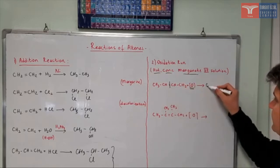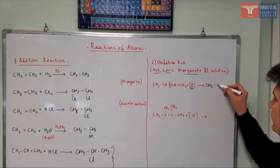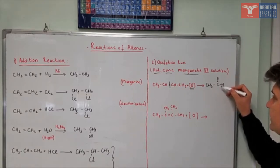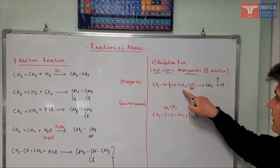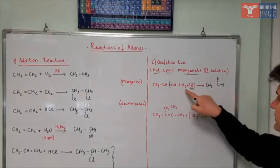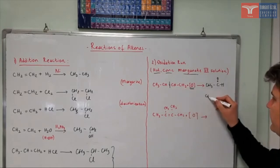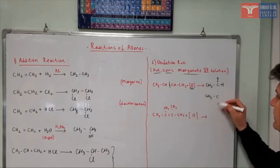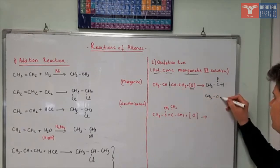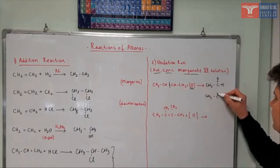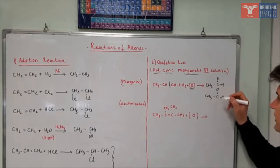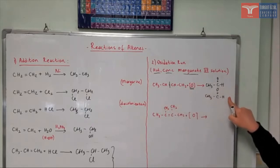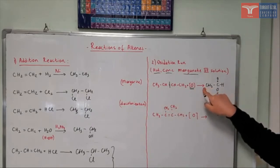Let's see the products. It's going to be CH₃ with a carbon double-bonded to oxygen and a hydrogen — that's an aldehyde. The other product is similarly CH₃ with a carbon double-bonded to oxygen and a hydrogen. So in this first oxidation reaction, my products are two aldehydes — they are in fact the same aldehyde, and you get two of them.